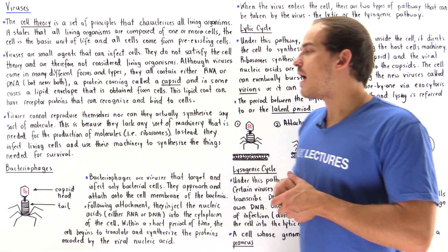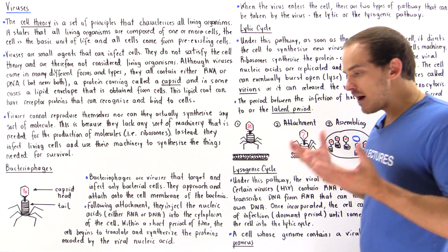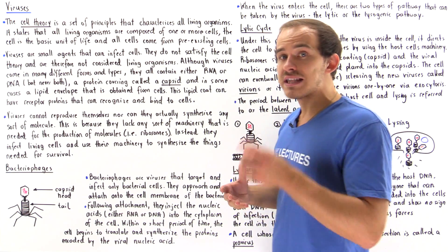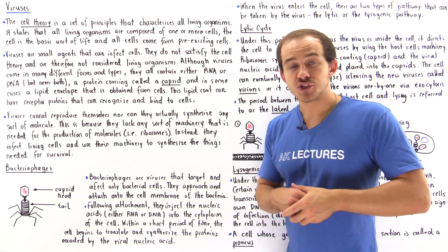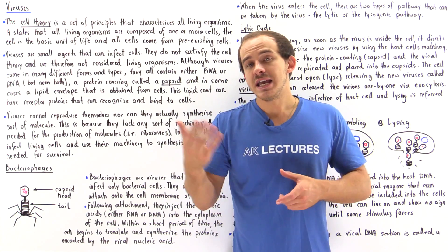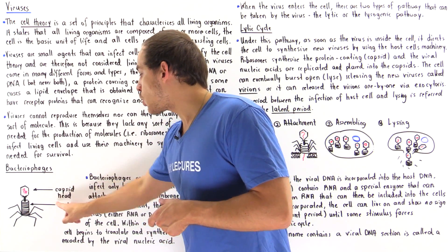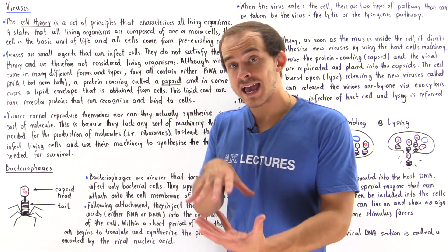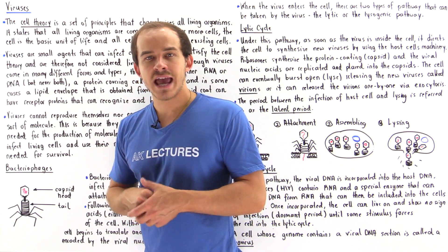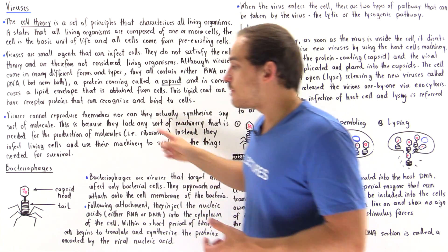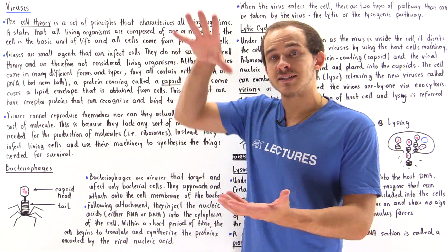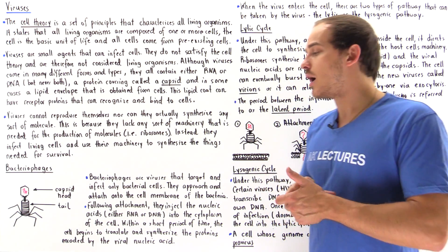One very common type of virus is a bacteriophage, which is a virus that only targets and infects bacterial cells. The structure of a bacteriophage includes nucleic acids — either DNA or RNA — found inside a protein capsid, also known as the head. It also has a protein midsection and a protein tail. In order to attach the virus onto the cell membrane of the bacteria, the bottom portion of the tail must attach to the proper receptor on the bacterial cell membrane.